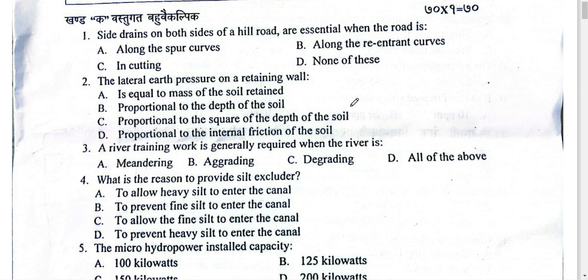The side drains on both sides of a hill road are essential. On both sides there is a side drain. When the road is along the spur (convex) and re-entrant (concave) curves and the cutting is non-operable, we need to provide a drain in the cutting area.